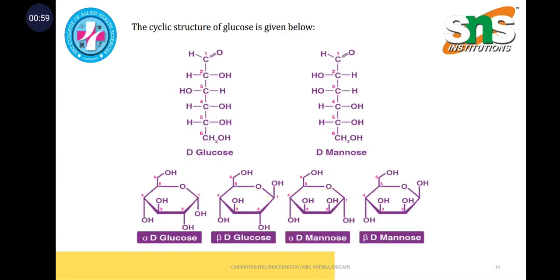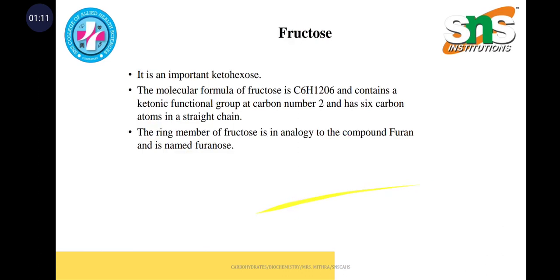This is the cyclic structure of glucose, where D-glucose and D-mannose are represented in the following figure, with alpha and beta groups also included.